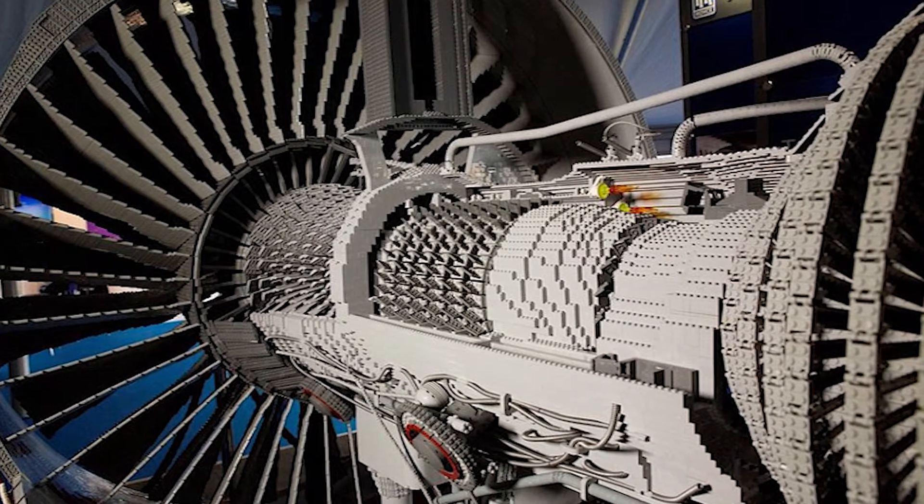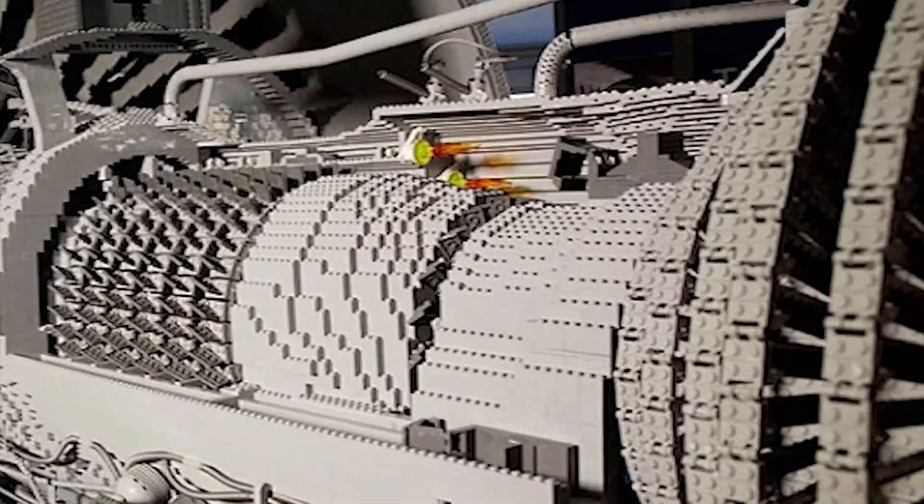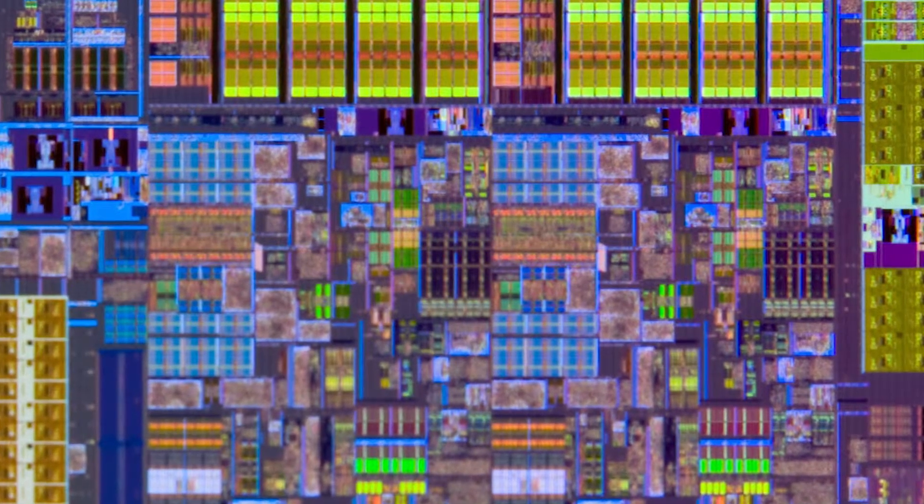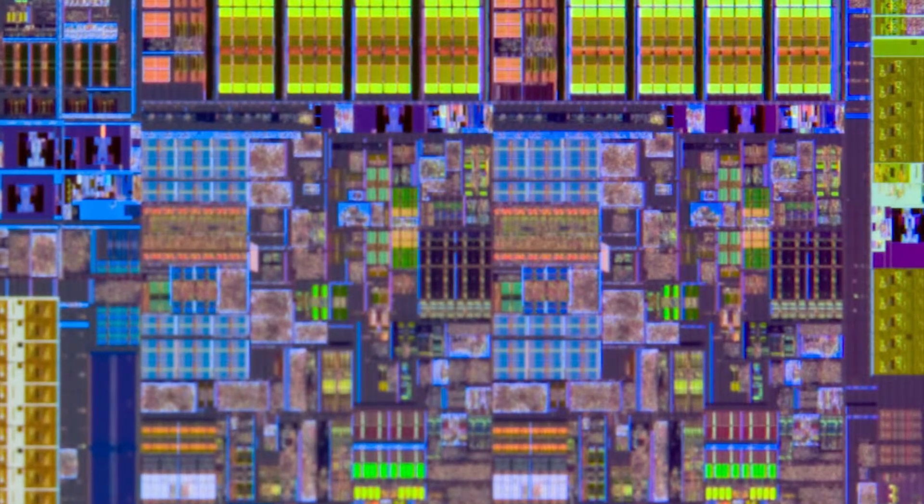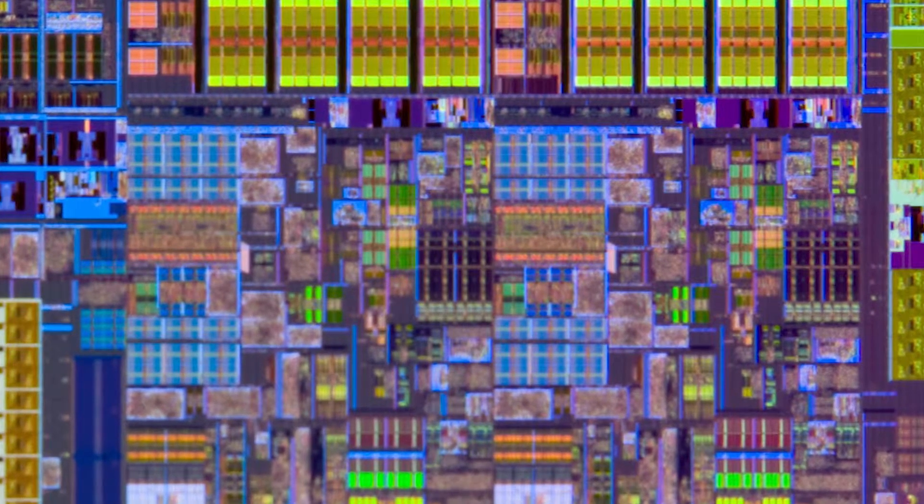Most complex things can be broken down into simpler component parts. This Rolls Royce jet turbine is built of Lego bricks and any microprocessor is just an array of transistors. Over 1 billion transistors in the largest microprocessor, but smaller more manageable components nevertheless.